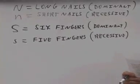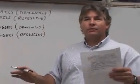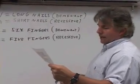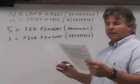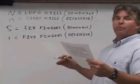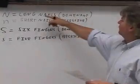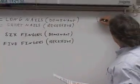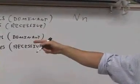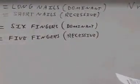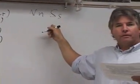The first thing you need to do is come up with the genes of the parents. If you don't get the genes of the parents, you can't even start the problem. When you read it, it says: what would the phenotype ratio of a cross between a male heterozygous for both traits? Heterozygous means one of each, so he's got to be heterozygous for nails — big N, little N — and he's heterozygous for fingers — big S, little S. Those are the genes for the male.